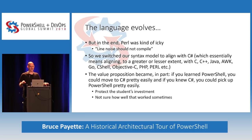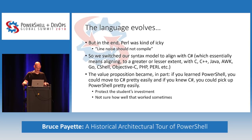The reason we didn't take more from Perl is that in the end, Perl is kind of icky. It grew up from a shell background but didn't rethink things terribly clearly at any point. At the time with Perl 4 or 5, you could basically dump arbitrary text into it and it would be valid script — line noise should not compile. We wanted people to be able to distinctly tell whether their script was valid or not. So we switched our syntax model to align with C#, which essentially means aligning with everybody that derives from C. Our value proposition became: if you learn PowerShell, you can move to C# and reuse a lot of knowledge, and vice versa.